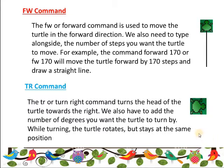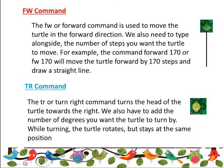Suppose I want to turn my turtle to a 90-degree angle, then I shall write tr space 90. The turtle will turn 90 degrees only — it will not move forward. If you want to move it forward, you have to write the fw command. Turn right only turns the head of the turtle to the right.